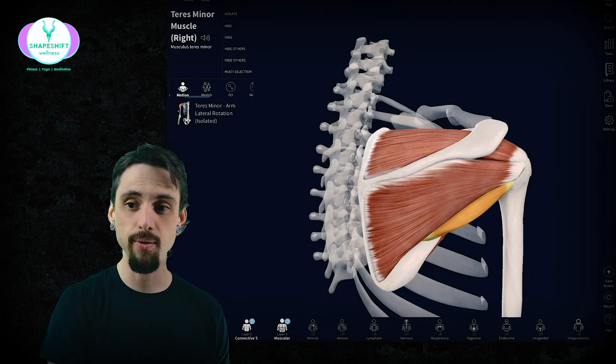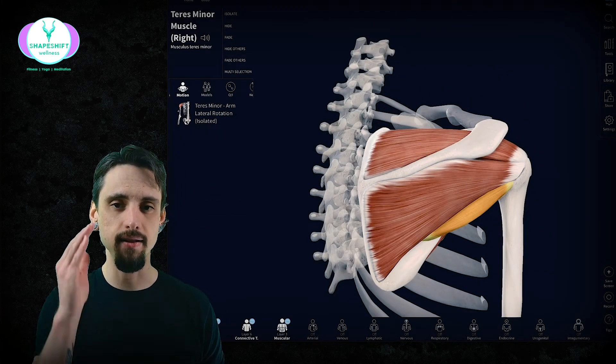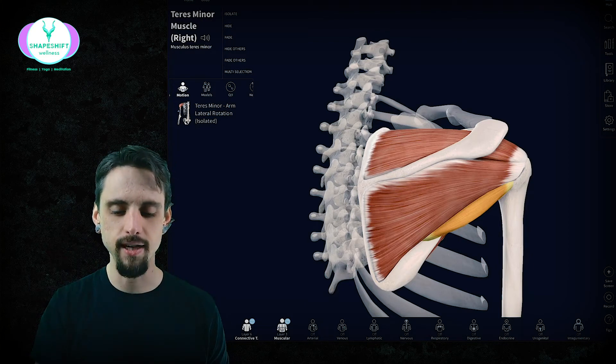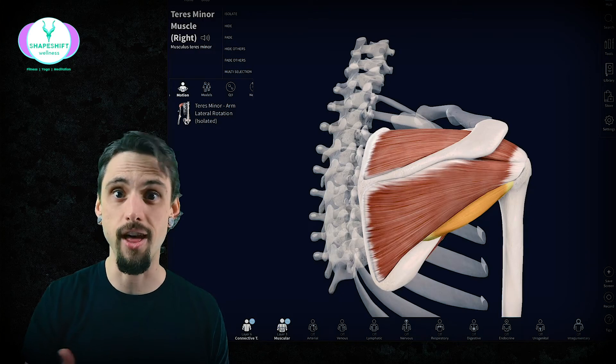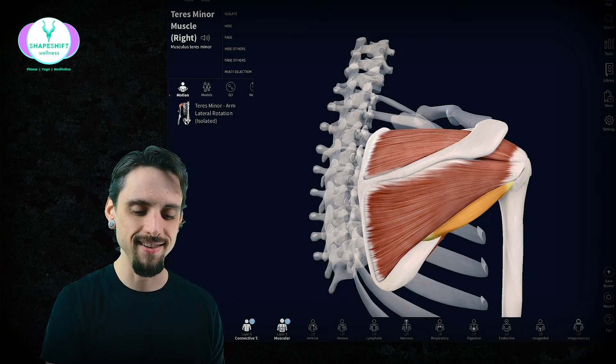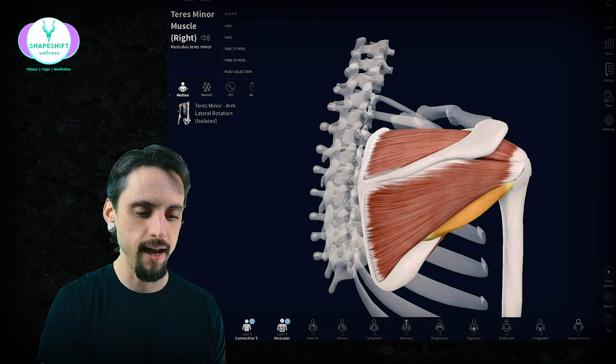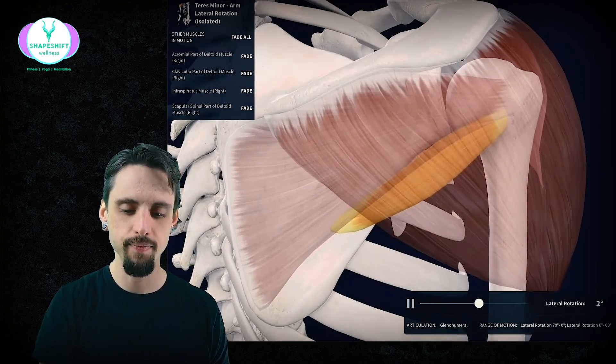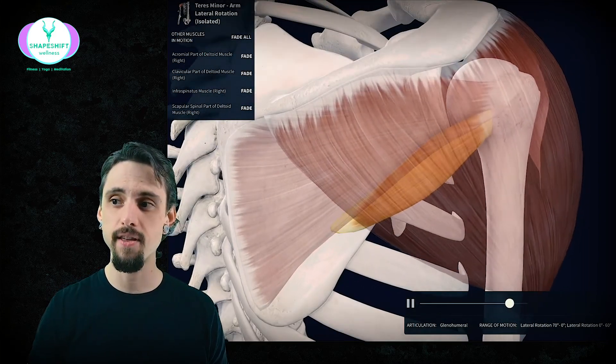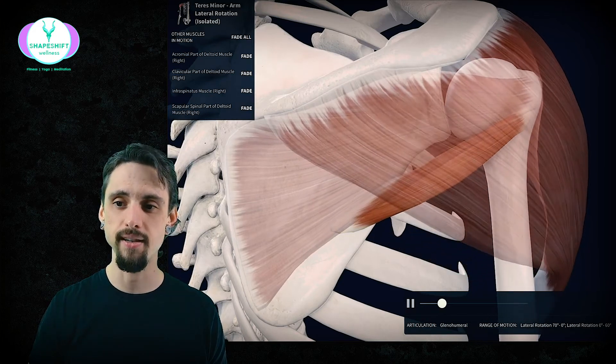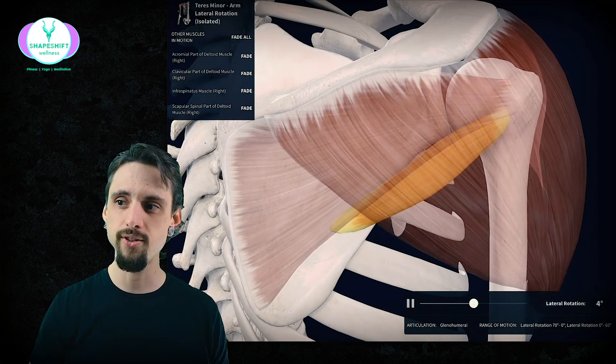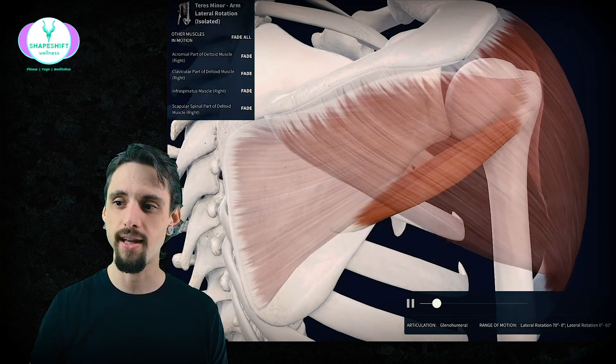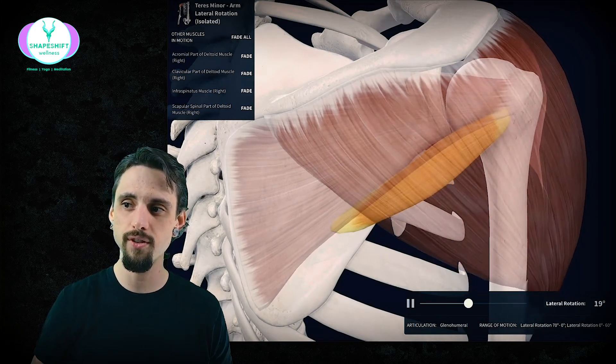Next, teres minor. Teres minor with an I, because again SITS, we have an I, and I just associate the teres minor as another I in the SITS muscles. And you can see that it does the same thing here—it does exactly the same thing that infraspinatus did. It's just smaller, so it can't work as hard, it cannot work as well. It's just not as strong, that's all.